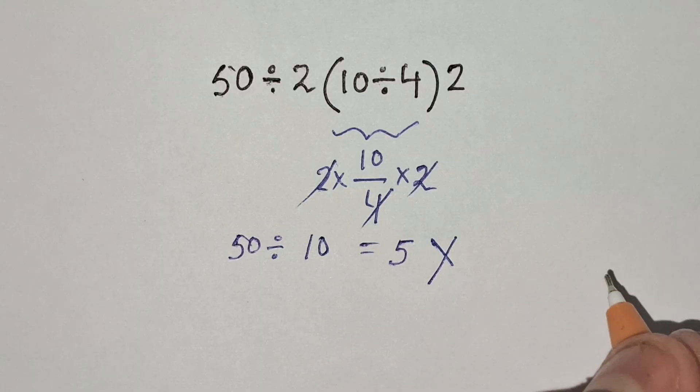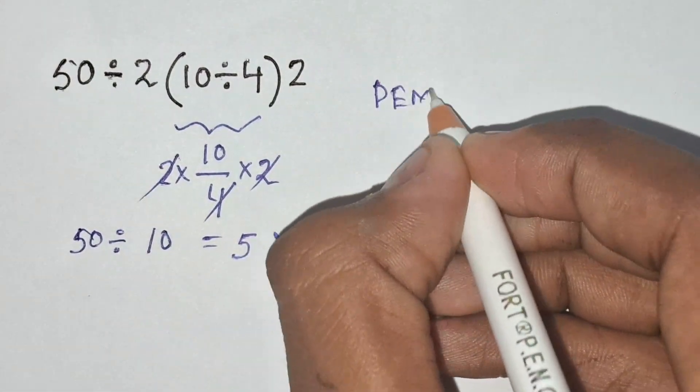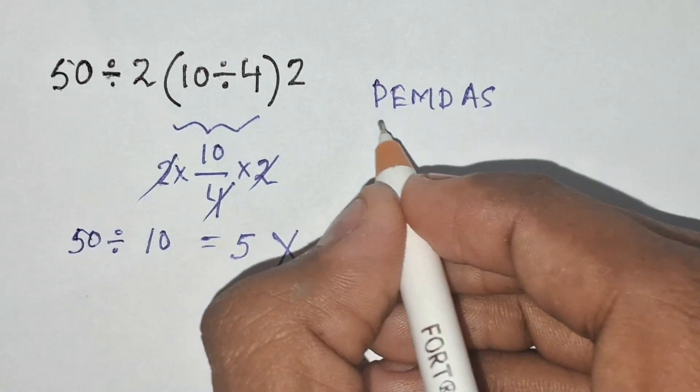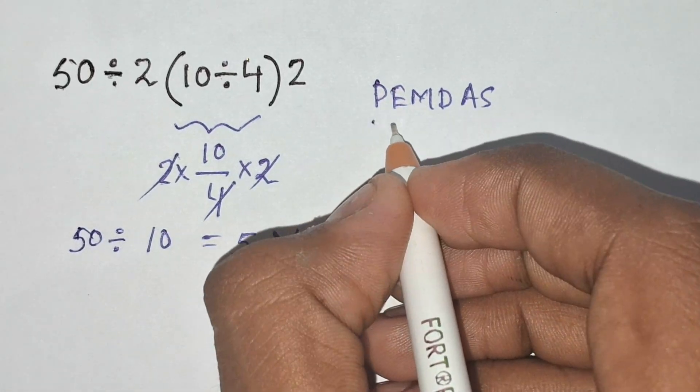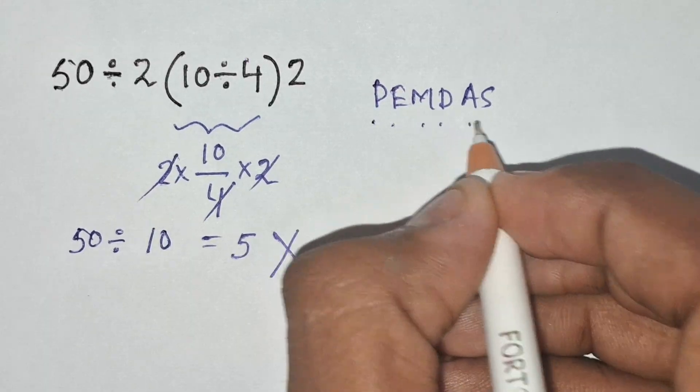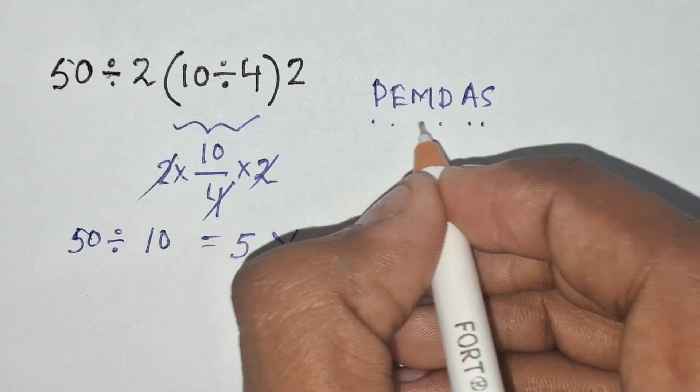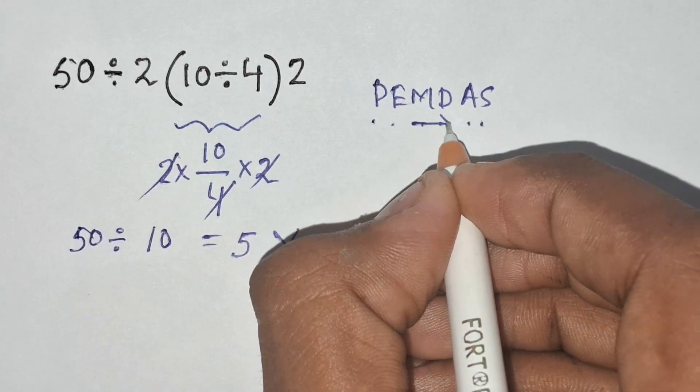According to the order of operations which is called PEMDAS, where P stands for parentheses, E for exponents, M and D stands for multiplication and division, and A and S stands for addition and subtraction. We have to remember that multiplication and division, and addition and subtraction, have equal priority, but we have to solve them from left to right.